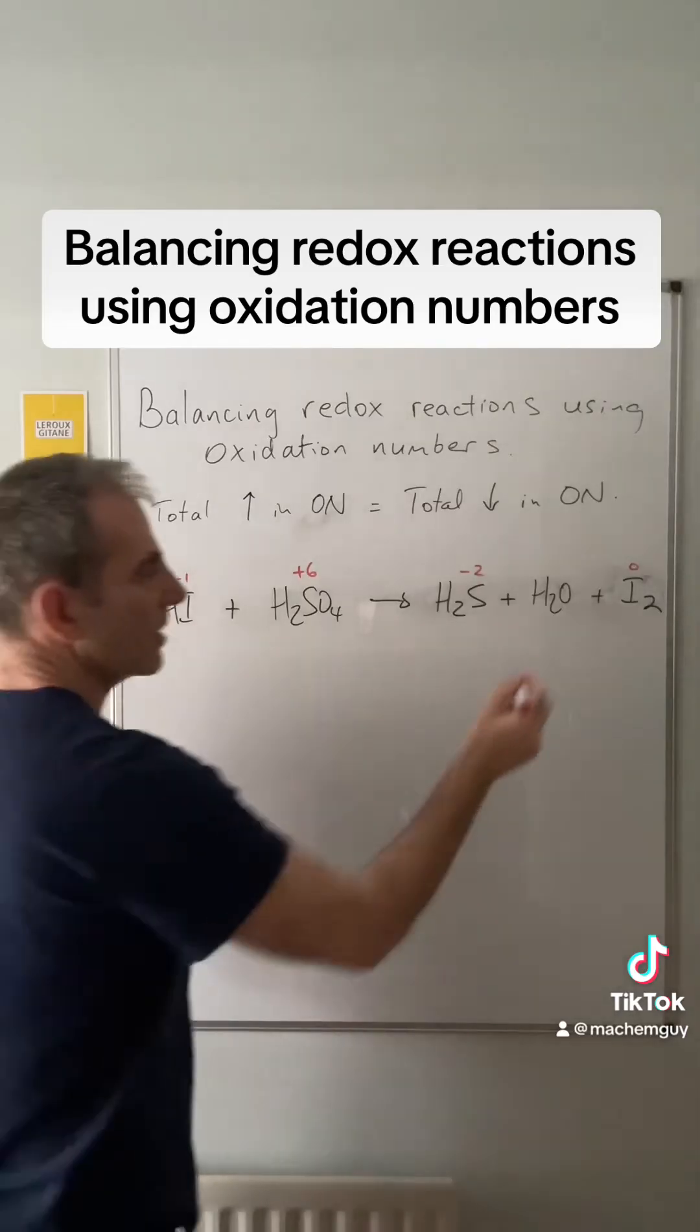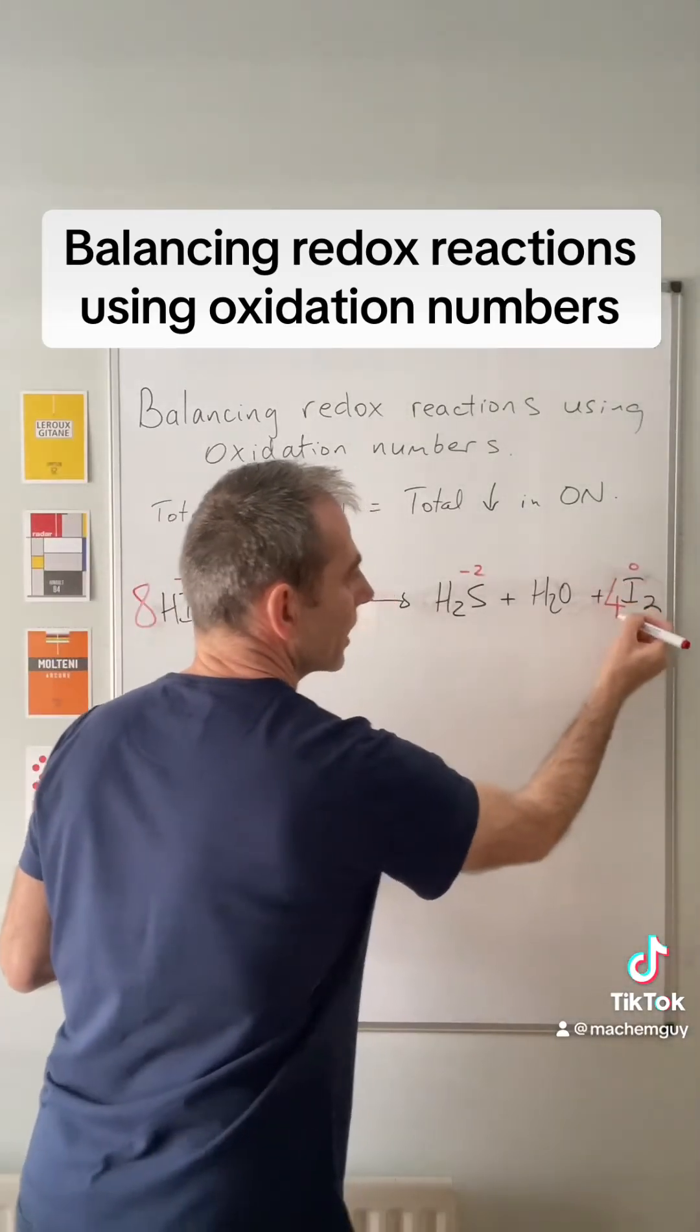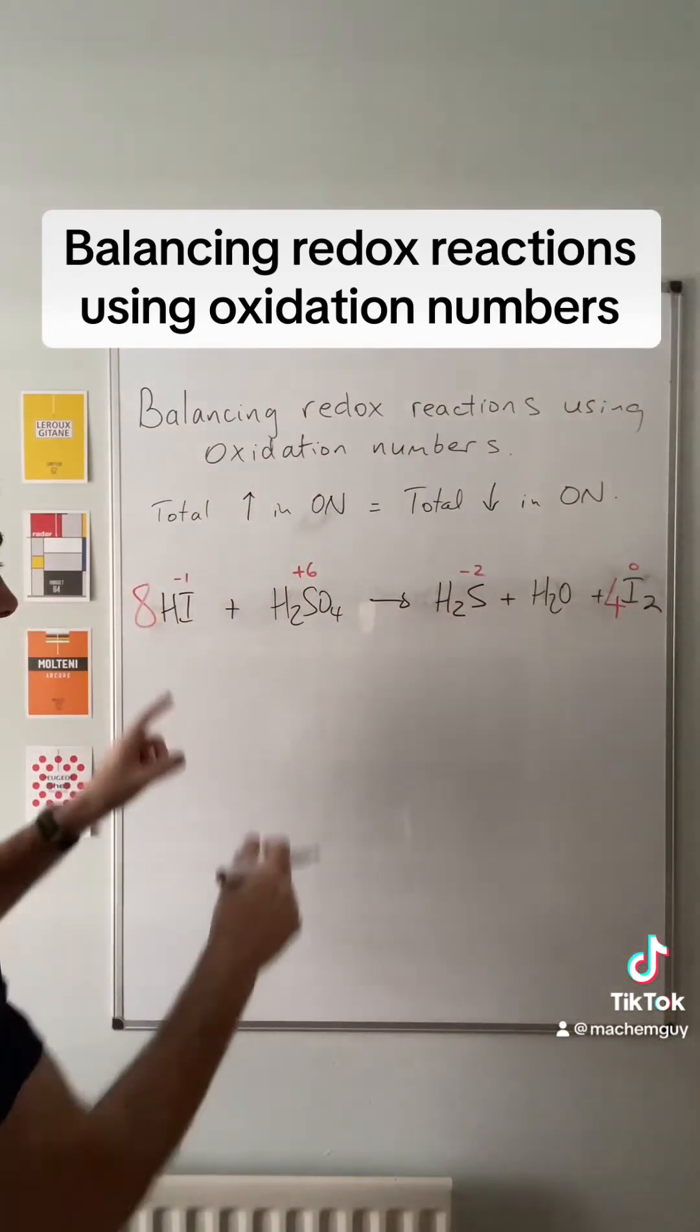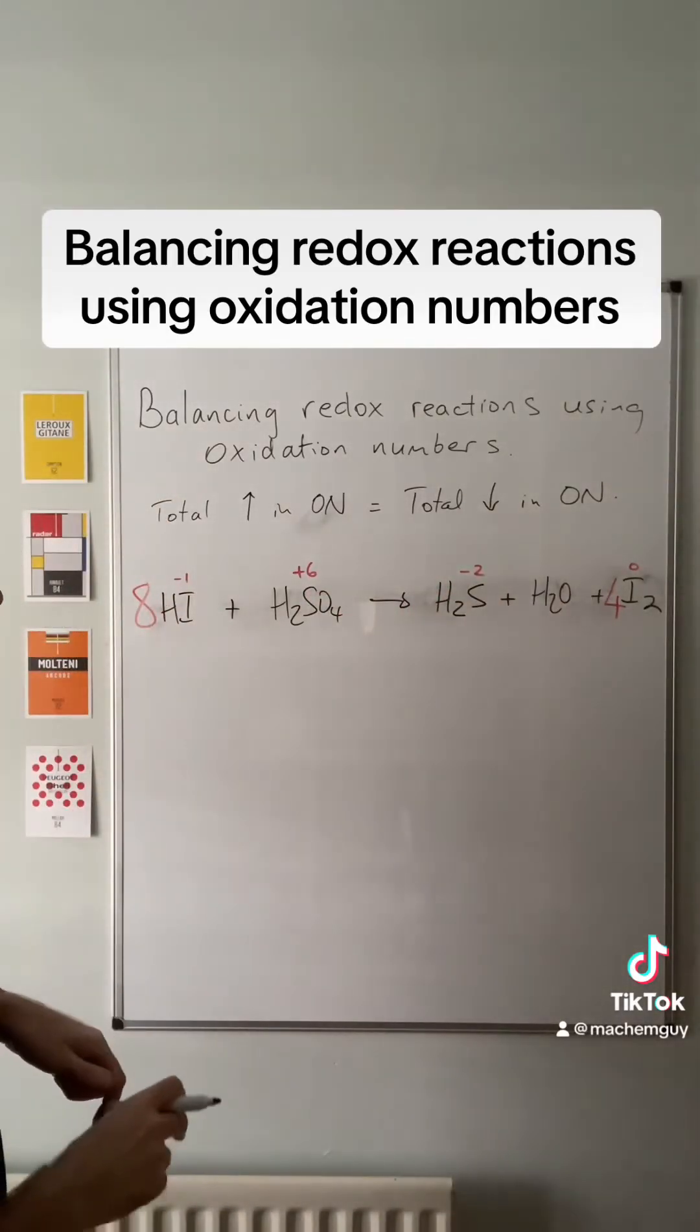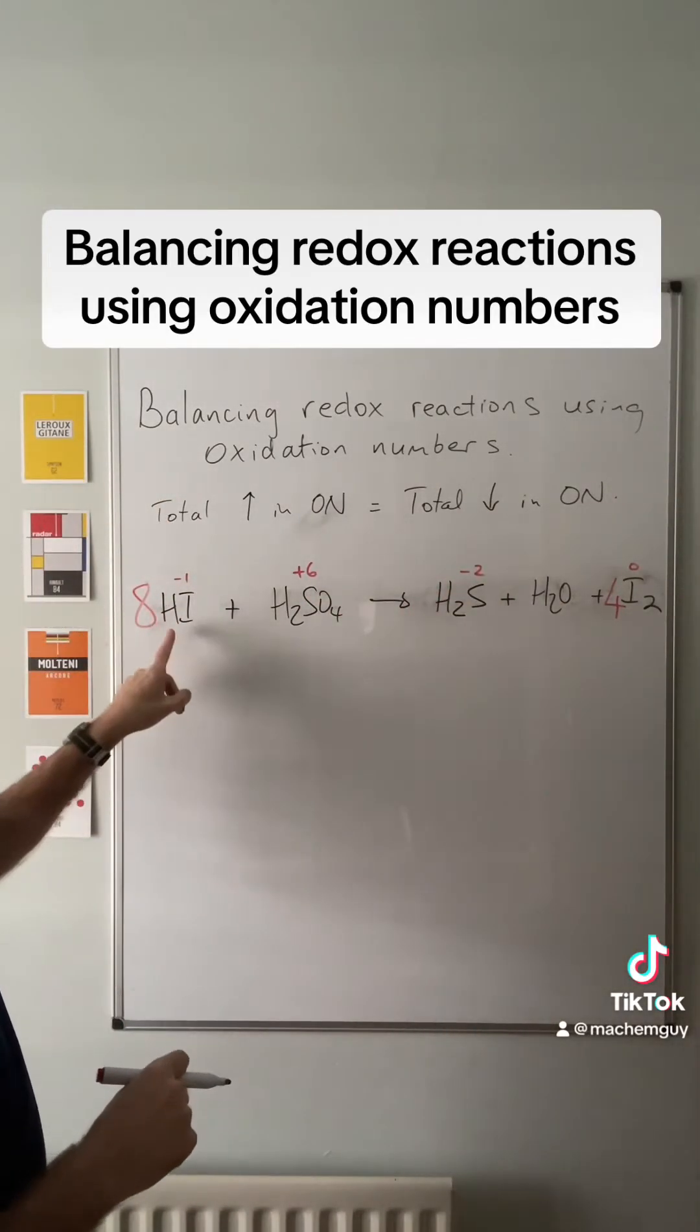We need to get the change of one up to a change of eight, so stick an eight there. That means we're going to need a four in front of the I2. We can't change these now because they're sorted.